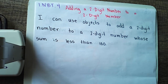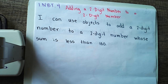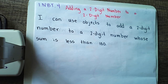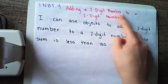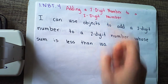Welcome back families and friends. We're here for day three of our math lesson. Yesterday we started working on adding one-digit numbers to two-digit numbers using objects. Today we're gonna knock that up a little bit and we're going to be continuing working on 1NBT4, adding a two-digit number to a two-digit number.